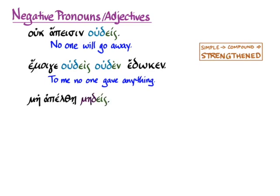Me apelthe medes — 'let no one go away.' Here we have one of the me forms with a prohibitive subjunctive. And again, we have a simple negative me followed by a compound negative, so the force of the negative is strengthened.